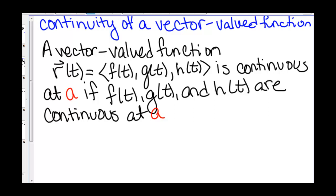Continuity of a vector-valued function. Let's say we have a vector-valued function r(t) = ⟨f(t), g(t), h(t)⟩. That function is continuous at a point a if f(t), g(t), and h(t) are all continuous at a.